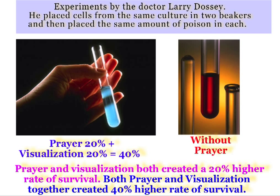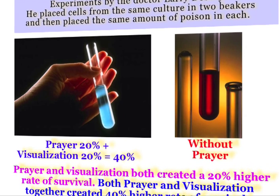This experiment makes it very clear that our thoughts and intentions have a direct effect on cells — and that could mean other people, it could mean ourselves, it could mean plants and animals. Our prayers, our visualizations, our sending of light has a direct effect on the world around us. We could even imagine this effect on situations such as the economy, people who are ill, or conflicts and war around us, by praying and visualizing positive realities or light in each situation.